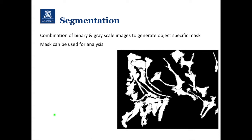We can go one step further and combine binary and grayscale images to generate object-specific masks. In this case we've got an area of cells, and we've been able to separate out the individual cells within the picture. We can then use those masks to say: analyze all the quantitative readouts about this cell, this cell, this cell, and so on within the image.